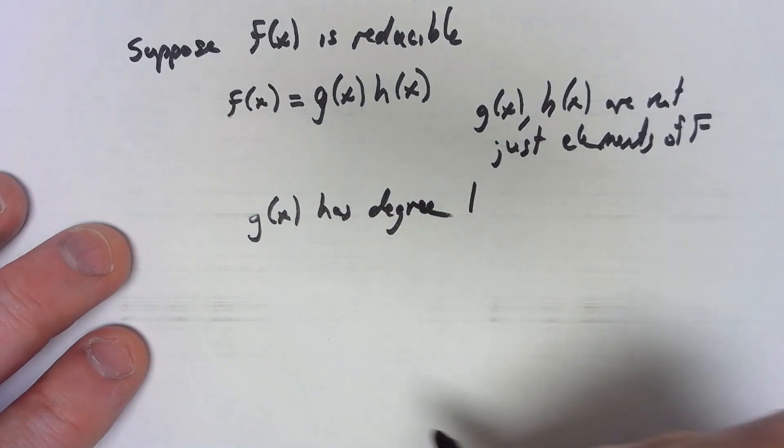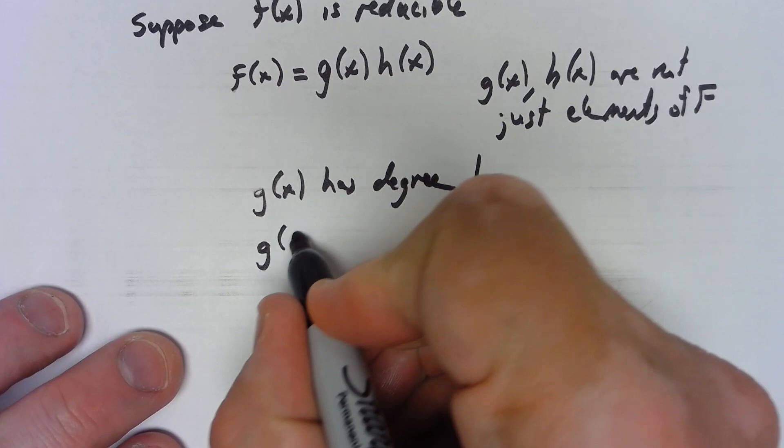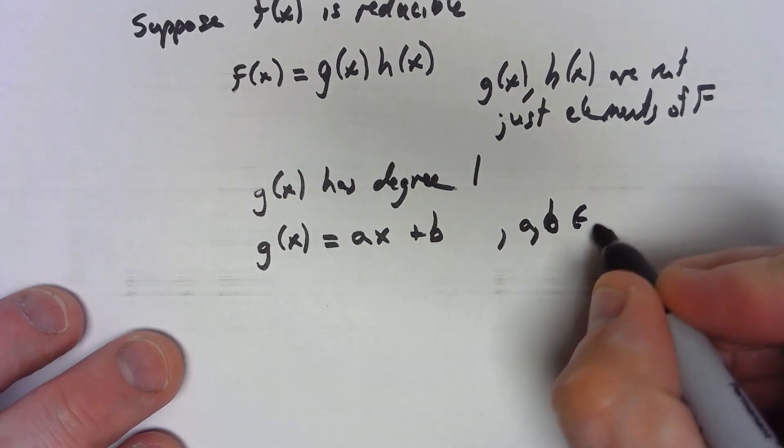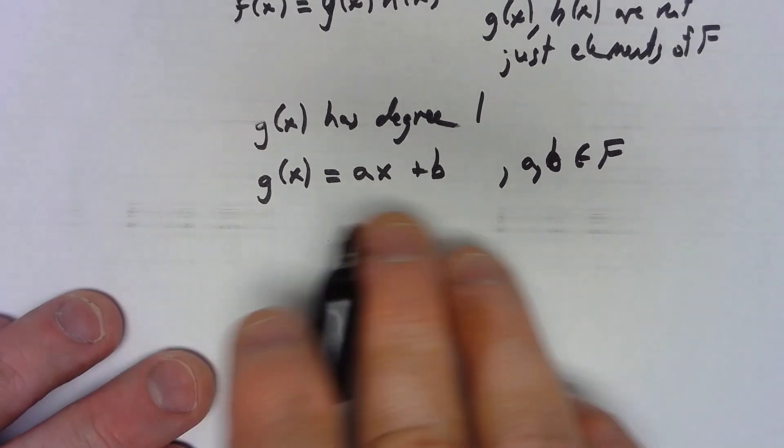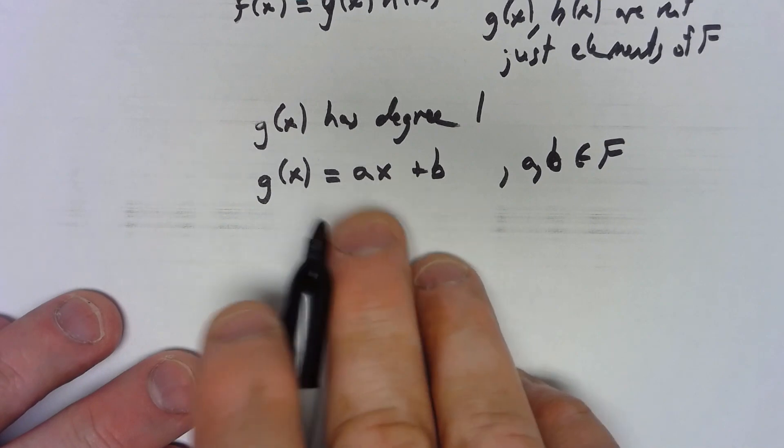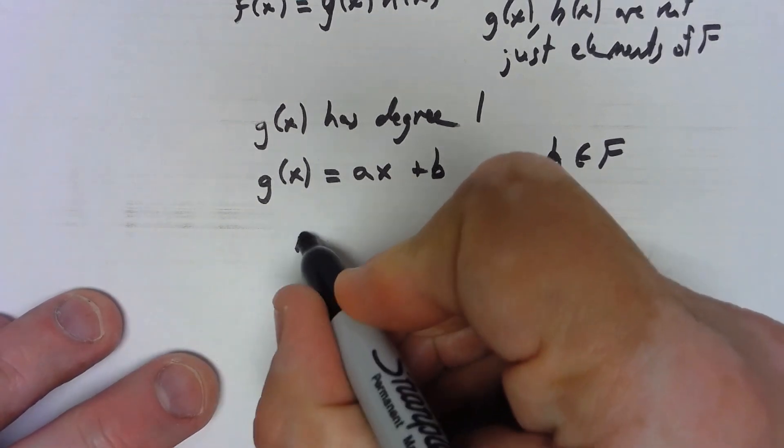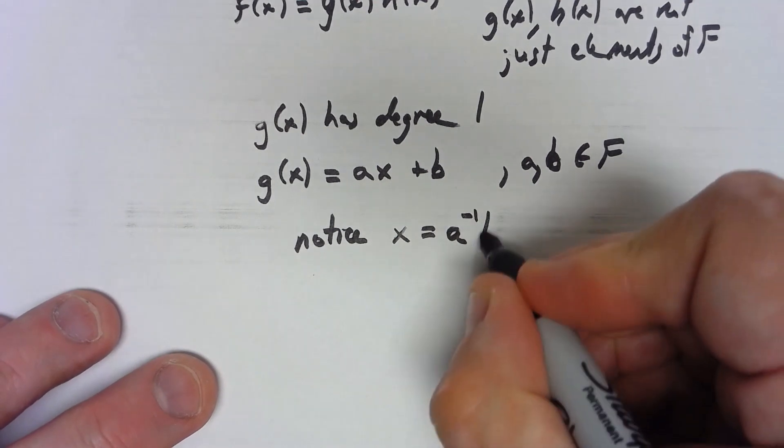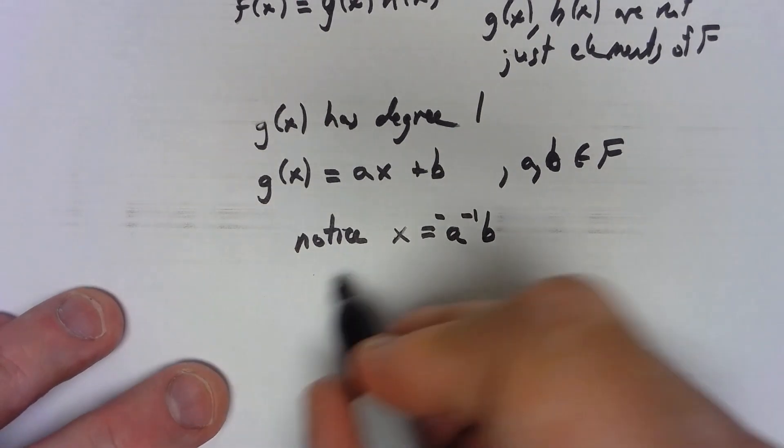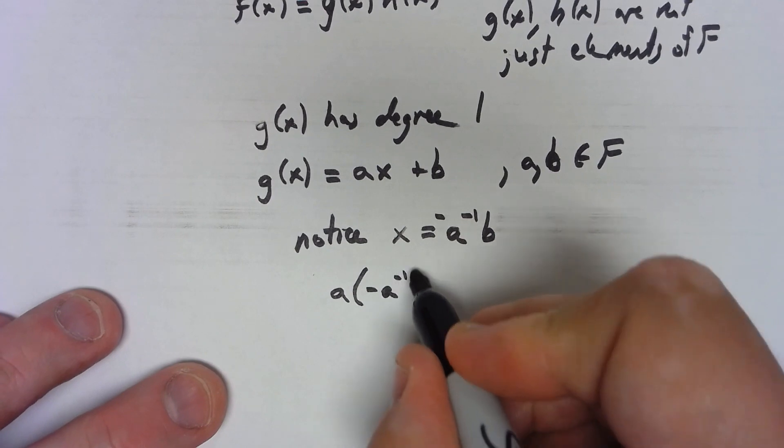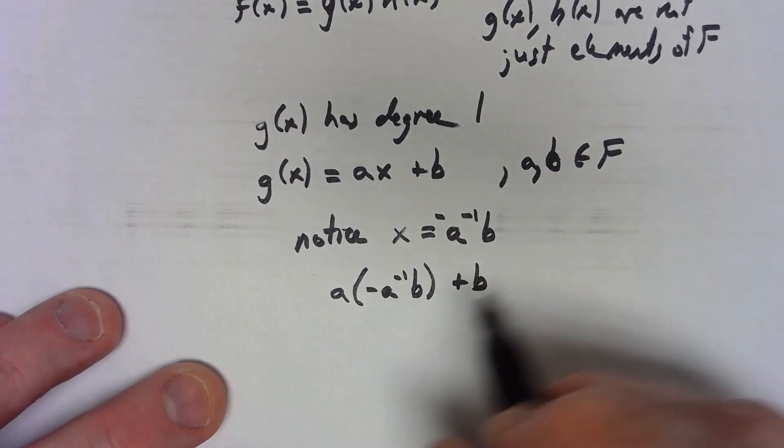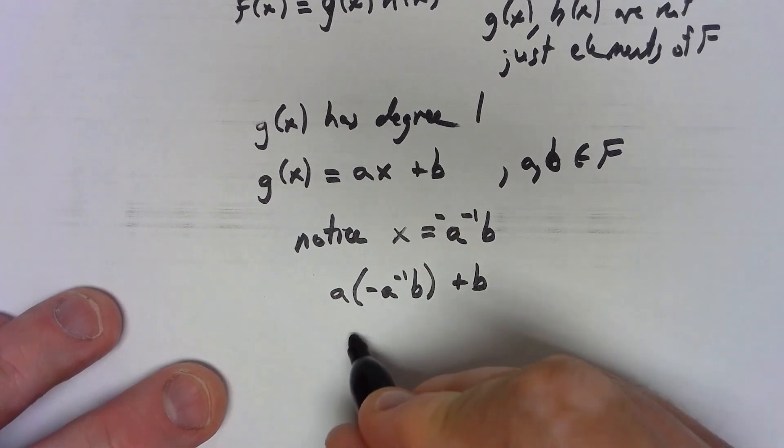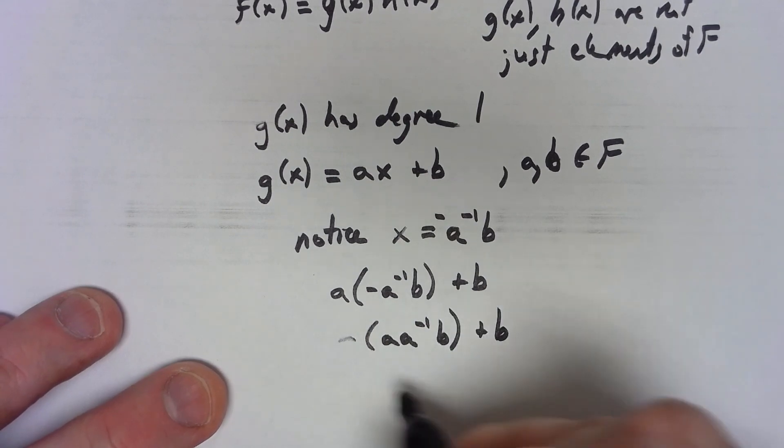Without loss of generality let's assume that g(x) has degree 1. Now being degree 1 means that g(x) would have to be some kind of an ax plus b where a and b are in my field. But there has to be a field element that makes this 0. Notably that if I say x is equal to the additive inverse of a inverse b, I have a times negative a inverse b plus b. The additive inverse bit can kind of be pulled out so I've got negative a a inverse b plus b. Negative b plus b is 0. So there we go that thing has to have a zero.